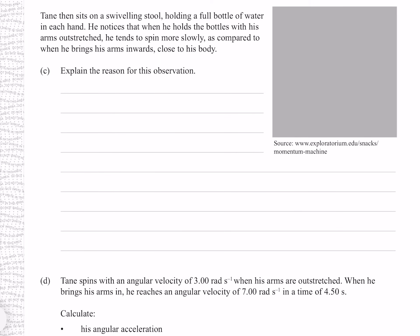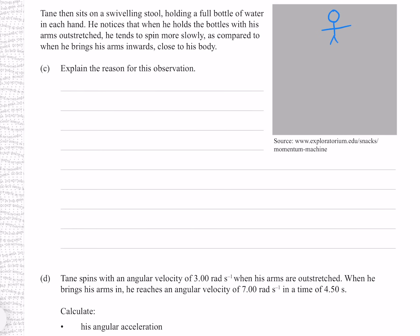Tane then sits on a swiveling stool holding a full bottle of water in each hand. He notices that when he holds the bottles with his arms outstretched, he tends to spin more slowly compared to when he brings his arms inwards close to his body. Explain the reason for this. When his arms are out, mass is distributed at a larger radius. Since rotational inertia is proportional to mr², an increased radius means greatly increased rotational inertia. Assuming conservation of angular momentum, and knowing L equals Iω, if I increases and L is conserved, omega must decrease.